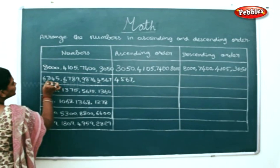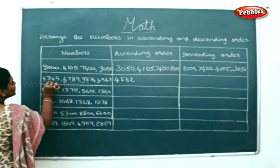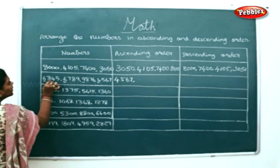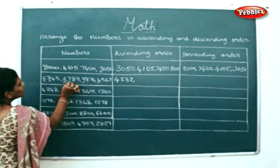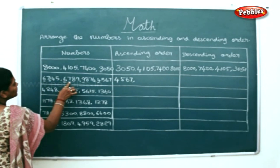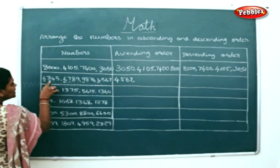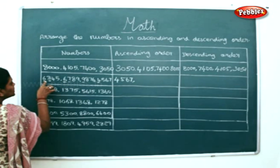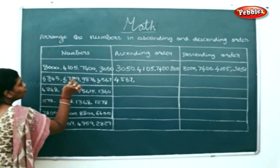So, we will check the hundreds places. Hundreds places: 6, 3 and 7. So, 3 is least compared to 7. So, 6, 3, 4, 5.